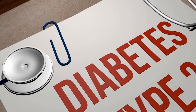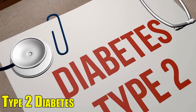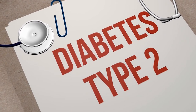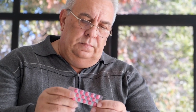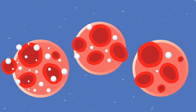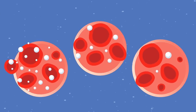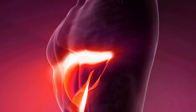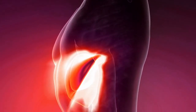On the other hand, type 2 diabetes is more common and usually develops later in life. It occurs when the body becomes resistant to the effects of insulin, and the pancreas cannot produce enough insulin to compensate.